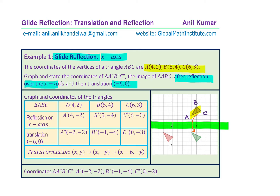During reflection, what happens? The x value remains the same. If I have a point (x, y) and I'm reflecting it, the transformation is very clear: the x, y values will change to x remaining the same, however y becomes negative y. So the transformation will be that the (x, y) point becomes (x, -y). The table here shows all these steps and the graph is shown on the right-hand side.